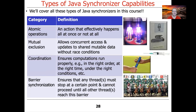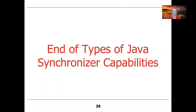We will cover all of these synchronizers in the course, starting with the most fundamental ones — atomic operations — and then using those to build mutual exclusion mechanisms, followed by coordinators and more as we progress. That's the end of the Java synchronization overview. What you learn with Java and its synchronizers will help you with other languages and platforms — C++, C#, C, or any language with concurrent access — as these mechanisms typically appear in one form or another even if the APIs differ slightly.